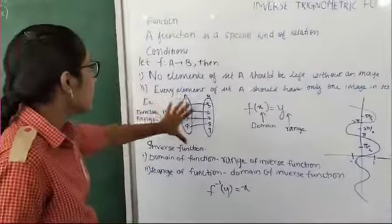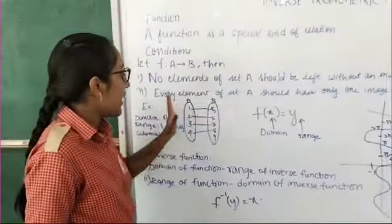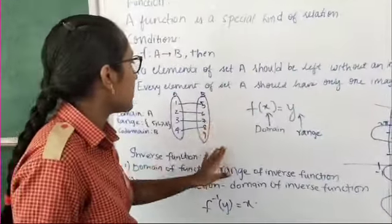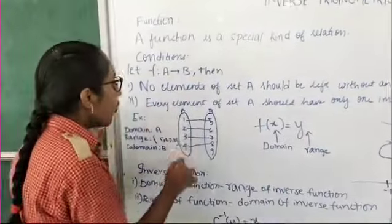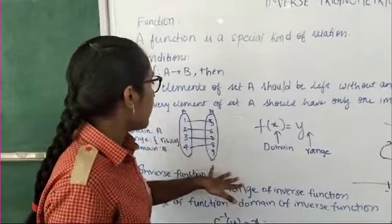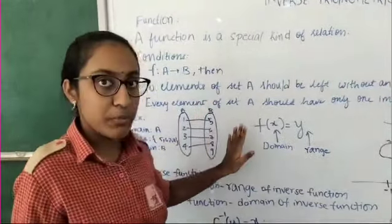If we take an example here, I have defined two sets A and B. In set A, I have these elements; in set B, I have these elements. You can notice that no element in set A has been left without an image, and they only have one image in B.